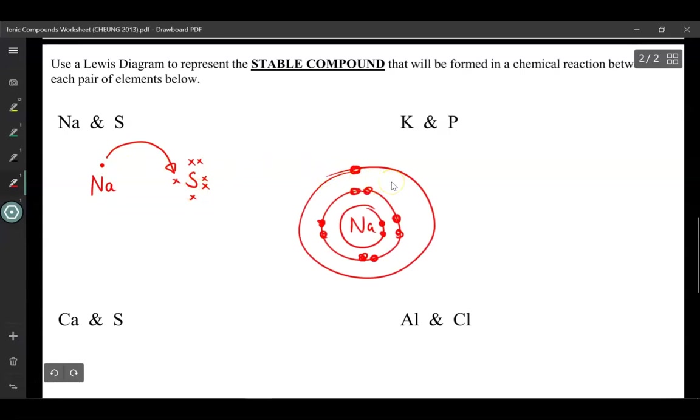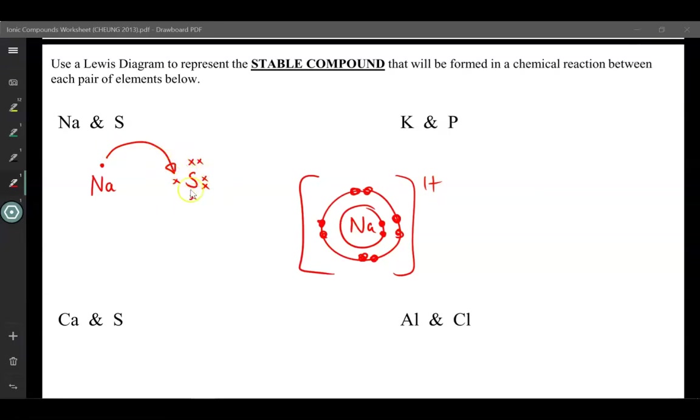And once the sodium loses that outer electron, it now has that full valence shell, and it is now a sodium cation with a 1 plus charge. However once the sulfur gains this electron, it's still missing one more electron to achieve that full octet structure. So would it be more helpful for me to add another sodium atom, or would it be more helpful to add another sulfur atom? If you're not sure, try them out!